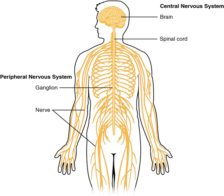The CNS is contained within the dorsal body cavity, with the brain housed in the cranial cavity and the spinal cord in the spinal canal. In vertebrates, the brain is protected by the skull, while the spinal cord is protected by the vertebrae. The brain and spinal cord are both enclosed in the meninges. Within the CNS, the interneuronal space is filled with a large amount of supporting non-nervous cells called neuroglial cells.